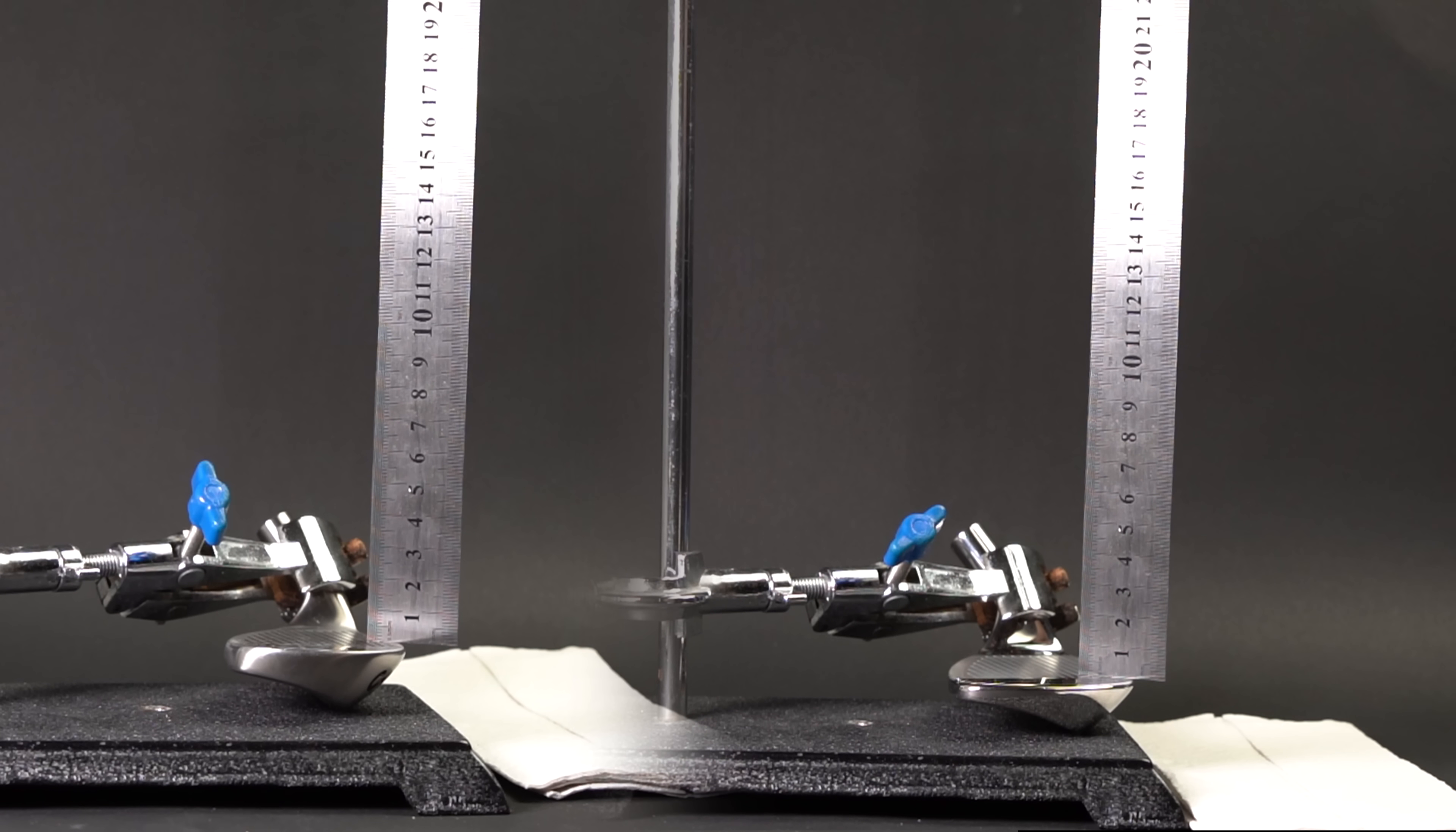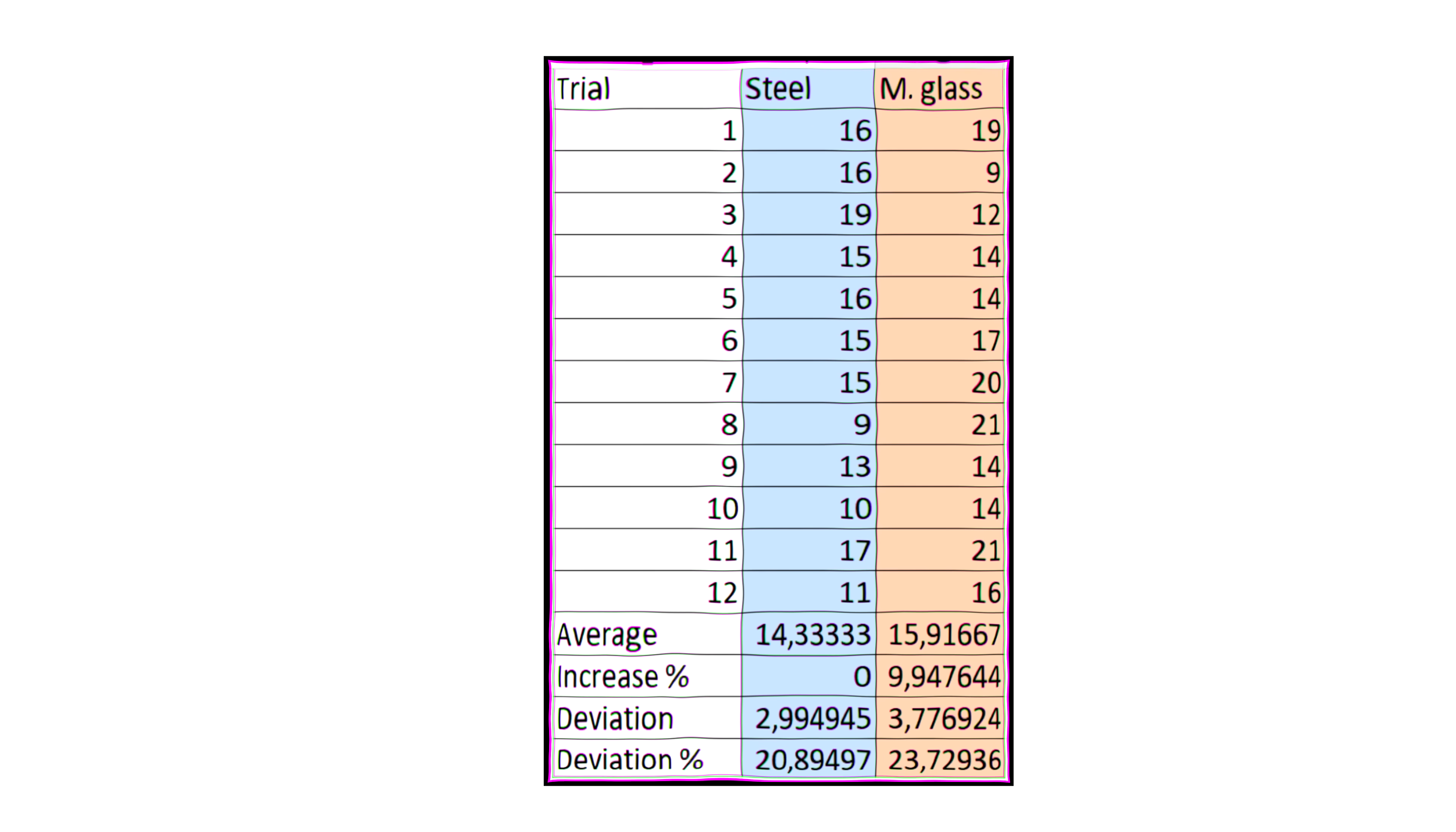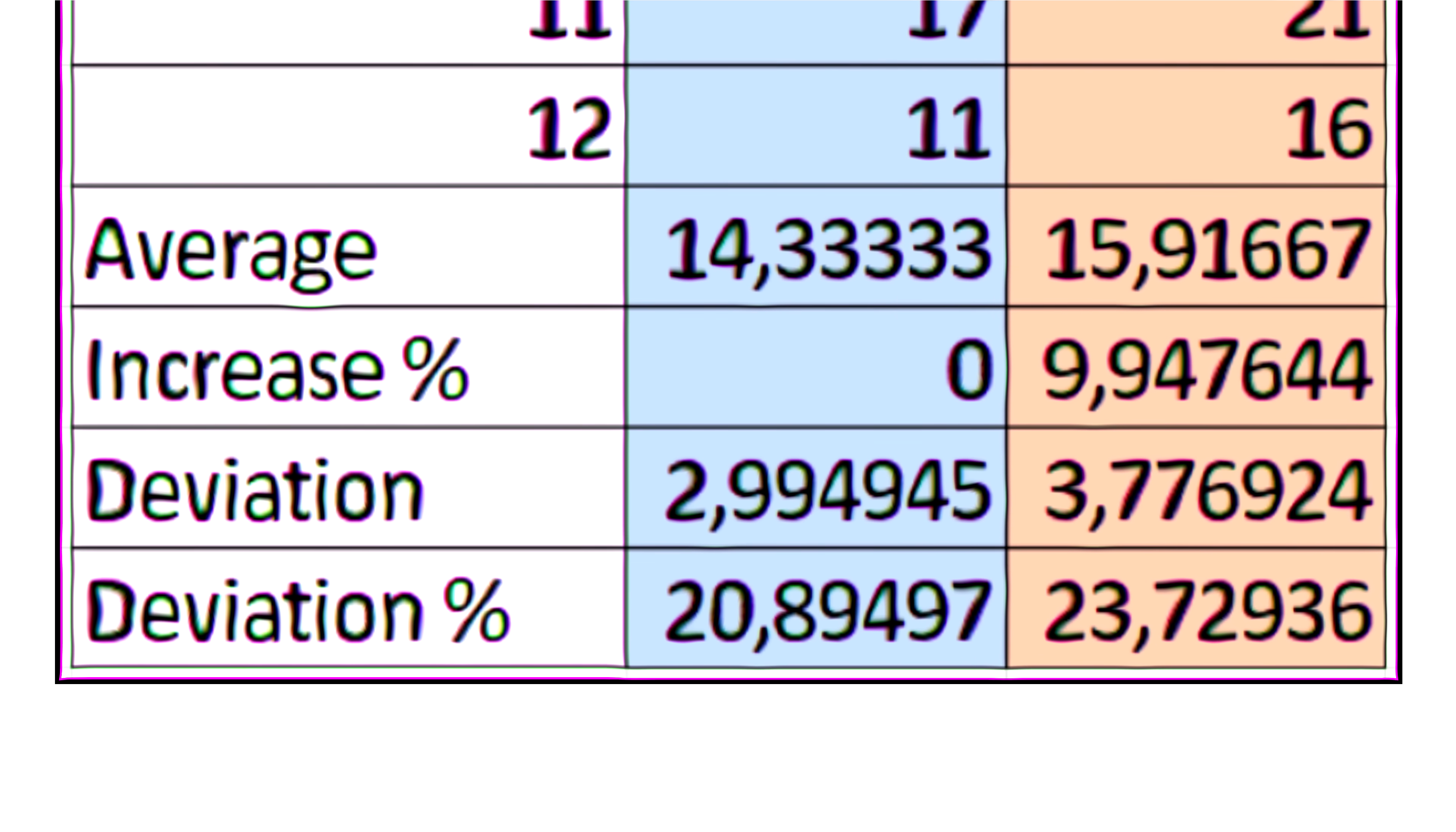For my experiment, I secured two golf club heads in a perfect horizontal position and started dropping the same steel bearing ball on them from the height of 40cm. From this footage, we can see that the ball bounces off metallic glass golf club slightly higher than from the steel one, although the difference isn't as significant as in the demonstrational video I showed you before. Based on 12 experiments, I found out that on average the ball bounces off the metallic glass golf club 10% higher, although these results are within the measurement accuracy.